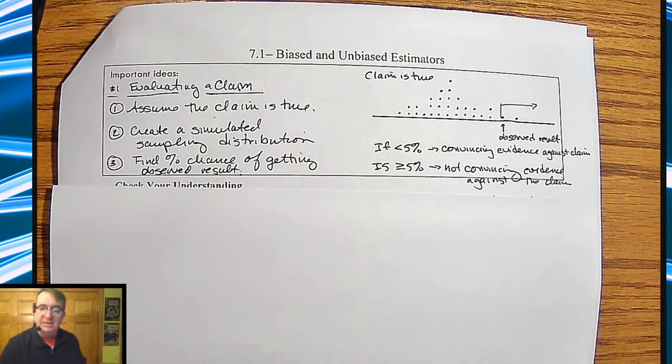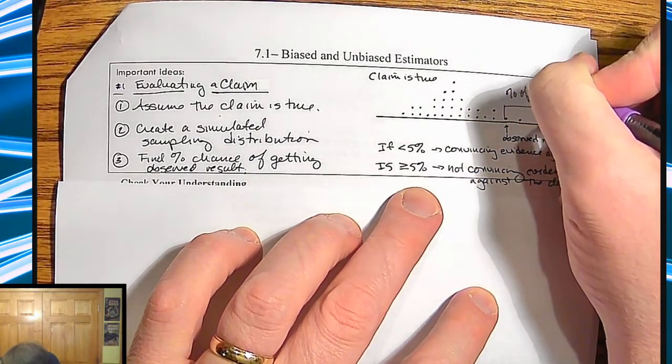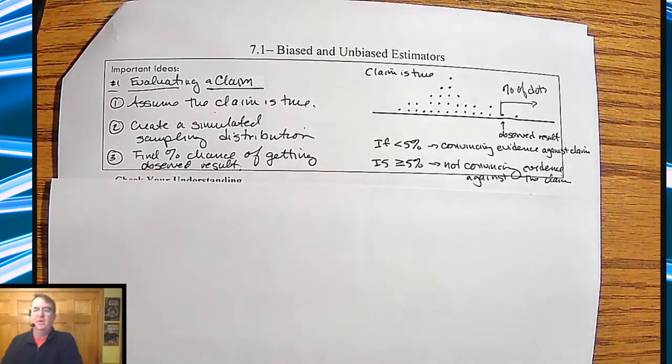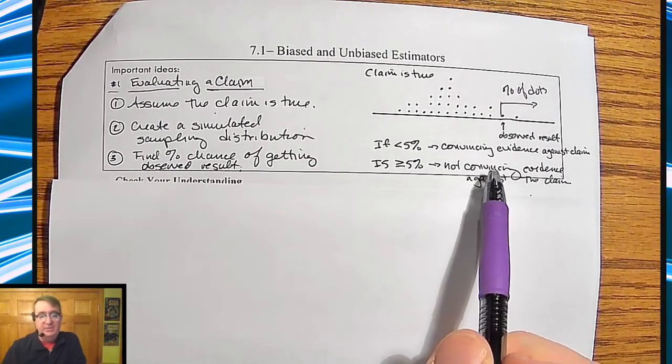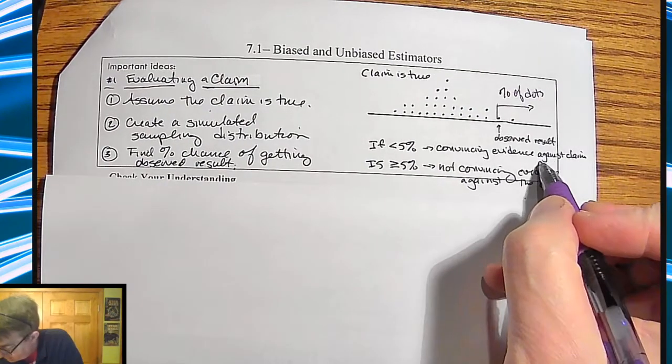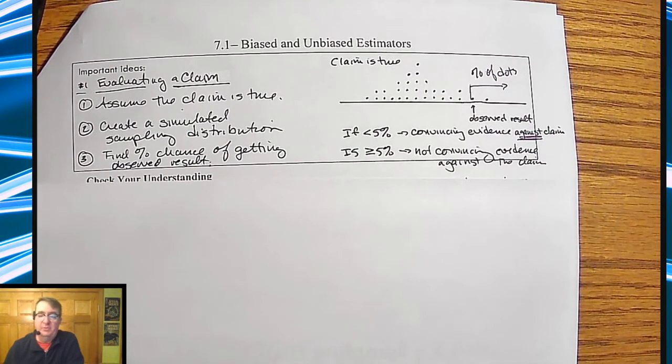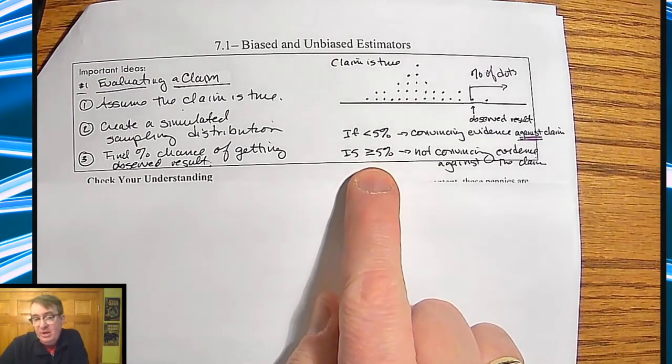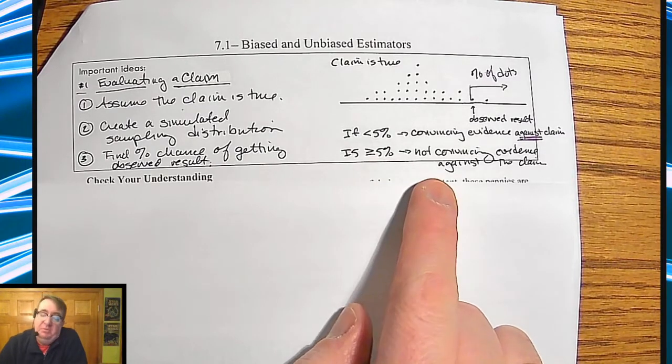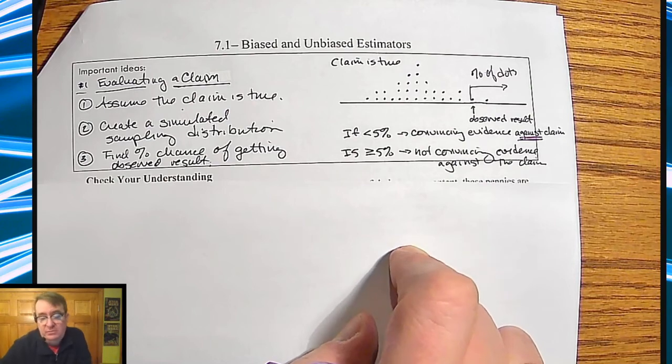If that number is 5% or less, then that's going to be convincing evidence. You're going to look for percentage of dots. So if that number is less than 5%, we're going to say it's convincing evidence against the claim. Or if it's bigger than or equal to 5%, then we don't have any convincing evidence that it's not true.